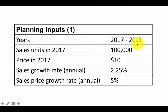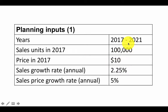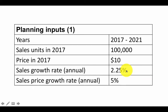We are doing this statement for the years 2017 to 2021, the five years. We are given that the number of sales units in 2017 — the number of units of our product that we expect to sell — is 100,000, and the price in 2017 is going to be $10 per unit. Further, the number of units sold is going to grow at 2.25% per year, and the sales price is going to grow at an annual rate of 5%. That could be to keep up with inflation or because our product will be getting improved over time.